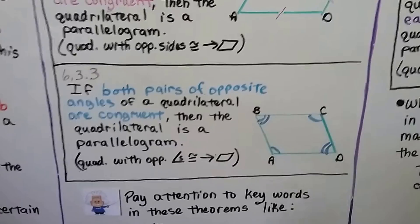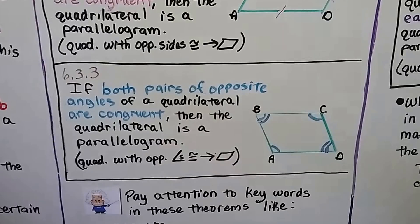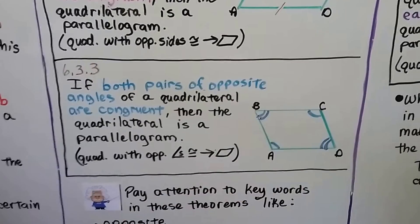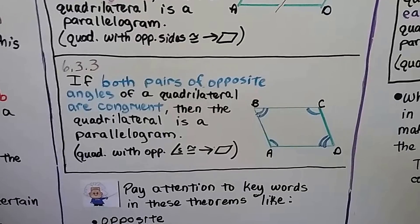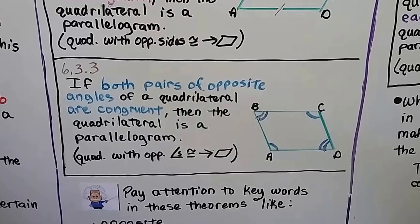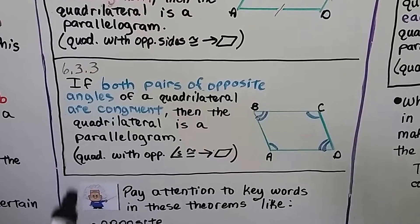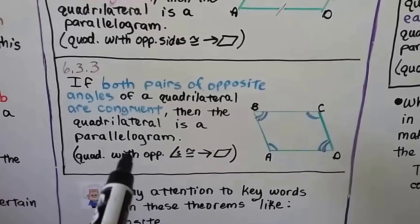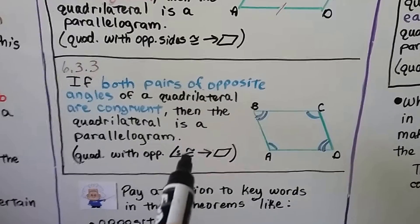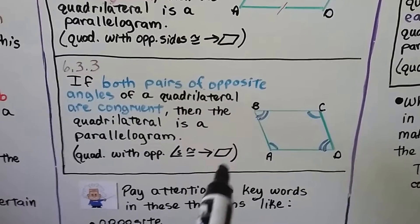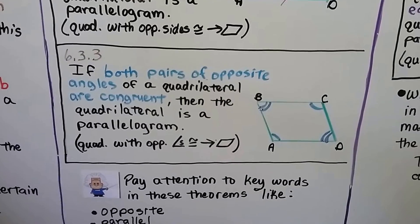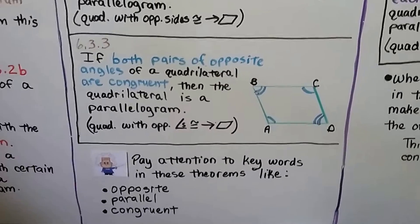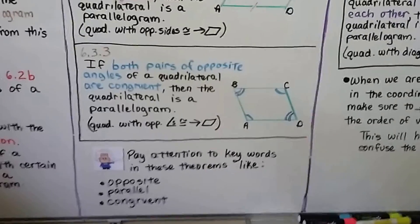Theorem three: if both pairs of opposite angles of a quadrilateral are congruent, then the quadrilateral is a parallelogram. In geometric notation: quadrilateral with opposite angles congruent, therefore parallelogram. Pay attention to key words in these theorems like opposite, parallel, and congruent.